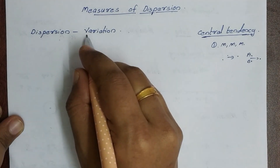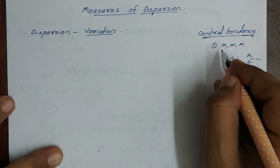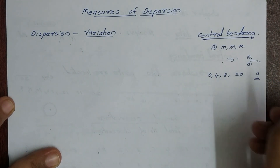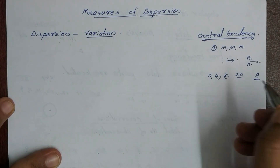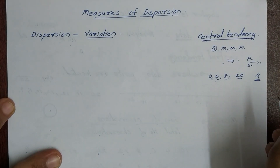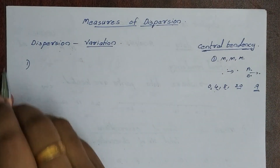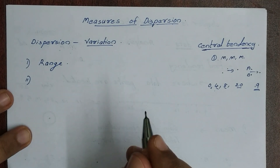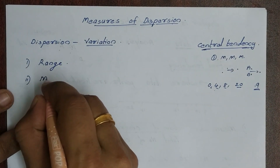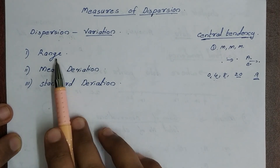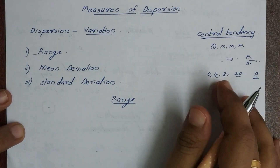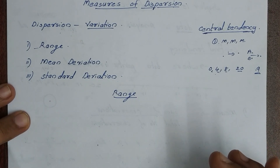So what is dispersion? We will add to central tendency. We will add data with marks like 0, 4, 8, or 20. If we calculate the mean, we get 9. But in this data there are so many variations and differences. That is why we do this dispersion. We will measure it. First one is range. Second is quartile deviation — we will not learn that. Then mean deviation. Then standard deviation. So these three measures are: range, mean deviation, and standard deviation. What is range? Maximum observation minus minimum observation — that is range.